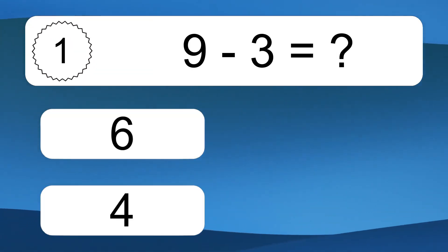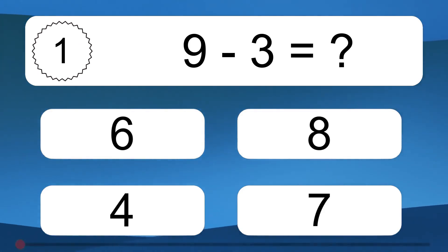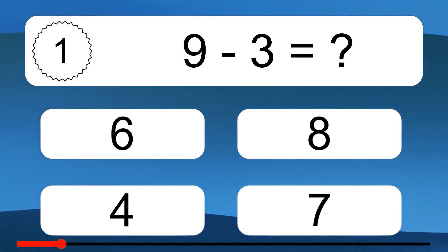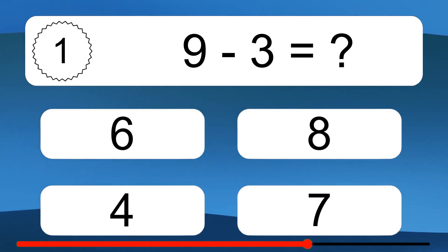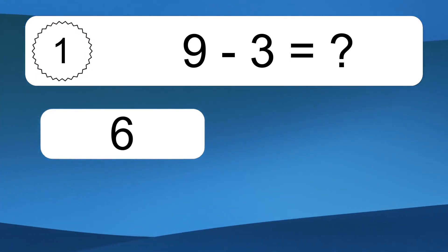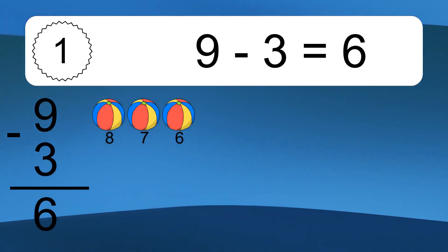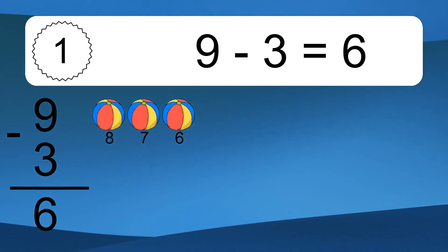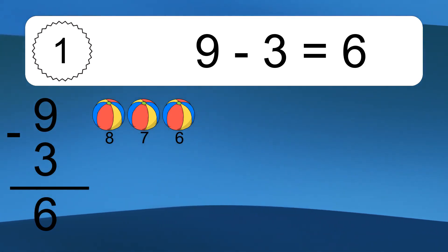9 minus 3 equals what? 9 minus 3 equals 6. Let's count it: 8, 7, 6.